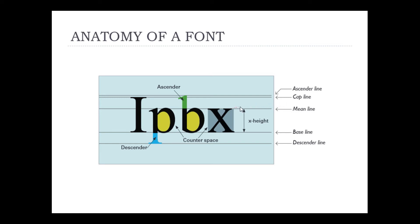The distance between the mean line and baseline can be referred to as x-height. Here we can see the mean line and the baseline, and the space between them is the x-height. There are two more very important terms called ascender and descender.